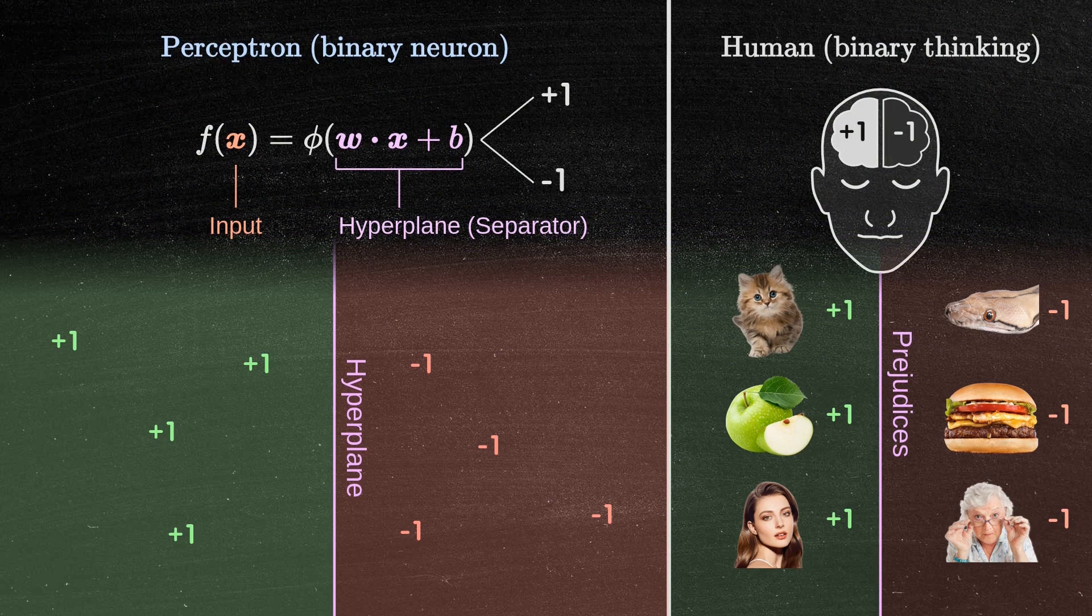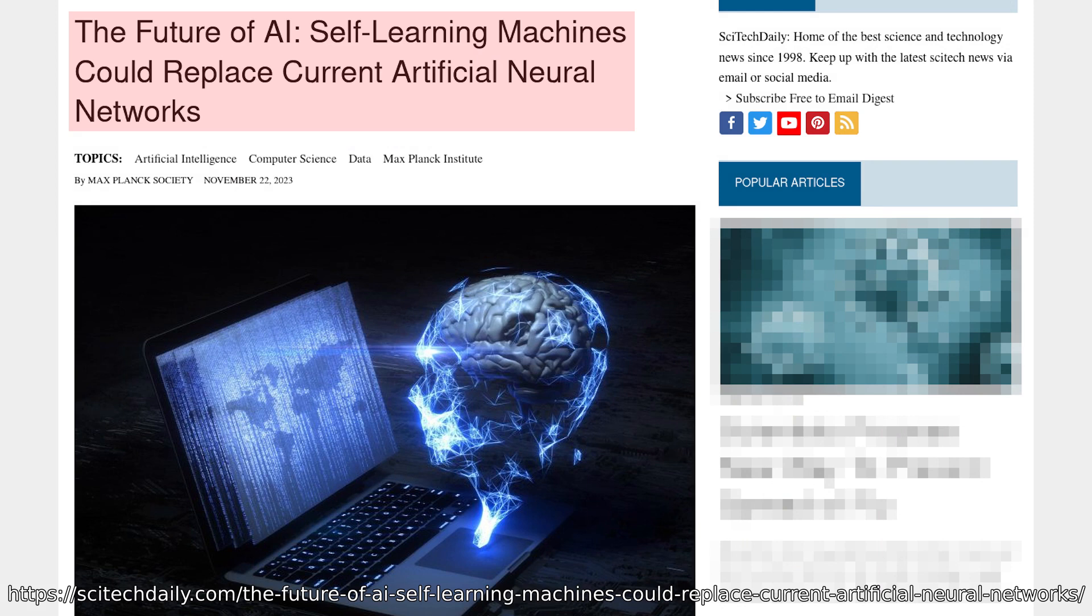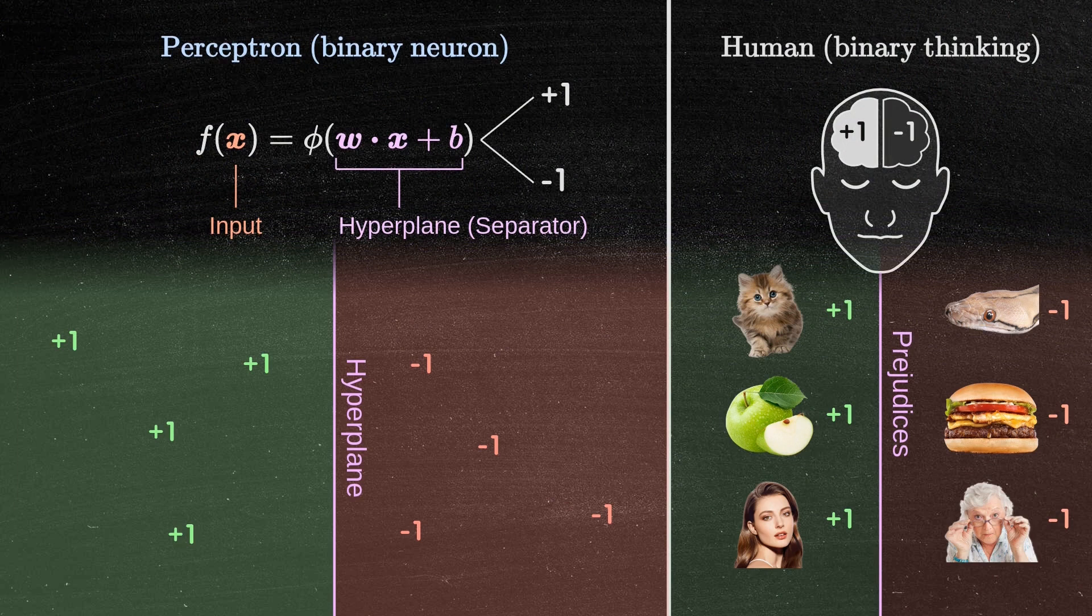In essence, the perceptron algorithm depends on information. Have you heard about artificial intelligence that learns by itself? Well, perceptron neurons aren't like that. They need information to learn.